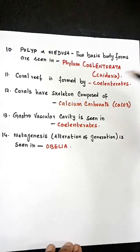Polyp and medusa are the two basic body forms seen in phylum Coelenterata, also called Cnidaria. Coral reefs are formed by coelenterates. Corals have...